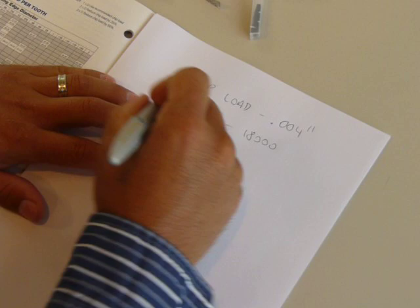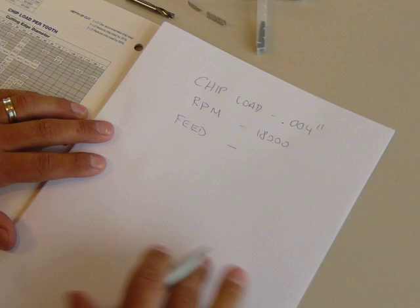And what we don't know is the feed rate. This is what we need to determine. Now, by having these two values, we can figure out what the feed rate needs to be.